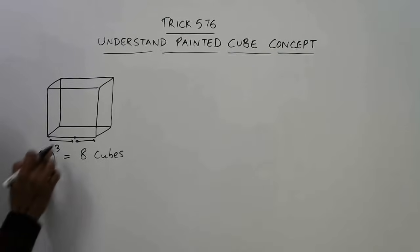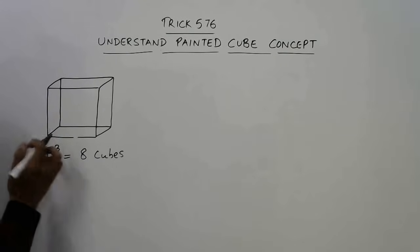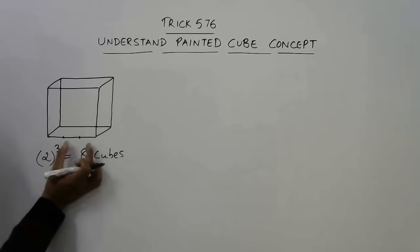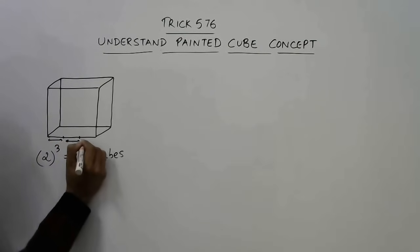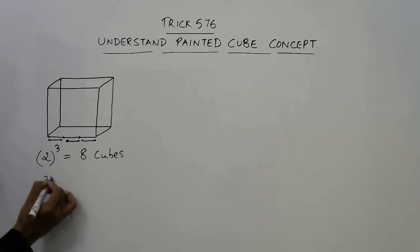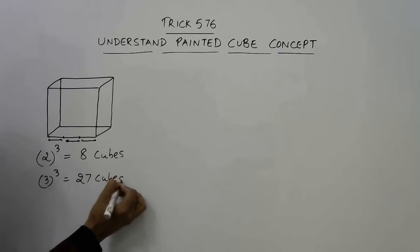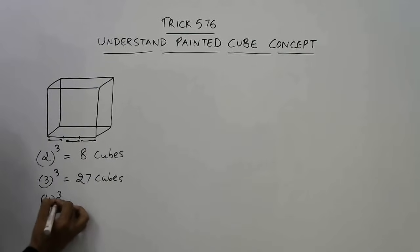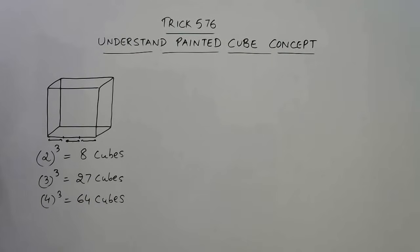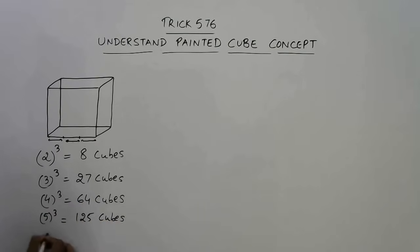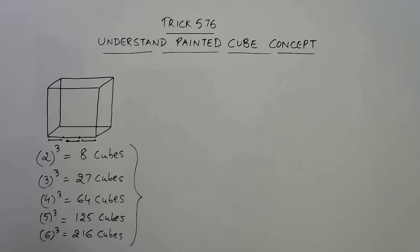Similarly, if you divide the length into three parts, then three cubed equals twenty-seven cubes. If you divide the length into four equal parts, then four cubed equals sixty-four cubes. If five cubes are cut along the length, then five cubed equals 125 cubes. If six cubes are cut along the length, then 216 smaller cubes will be there. So the number of smaller cubes will always be a perfect cube: eight, twenty-seven, sixty-four, 125, 216, and so on.